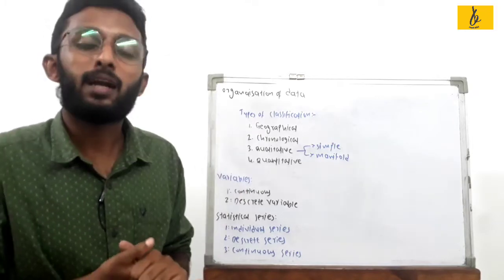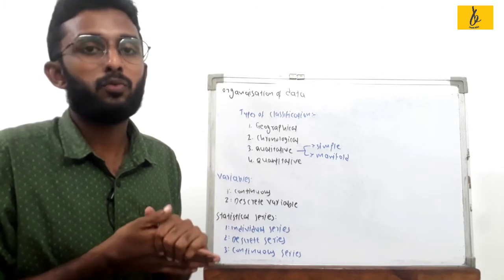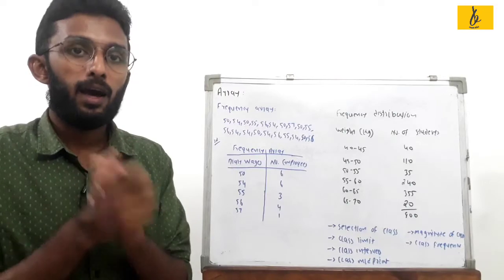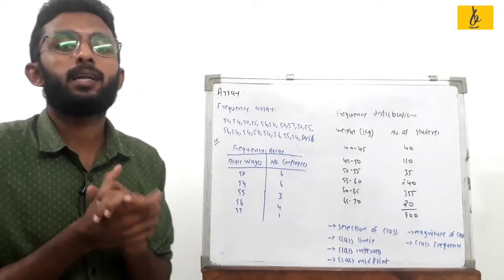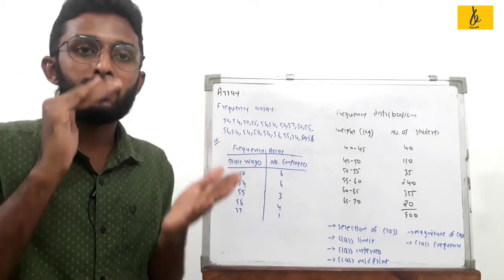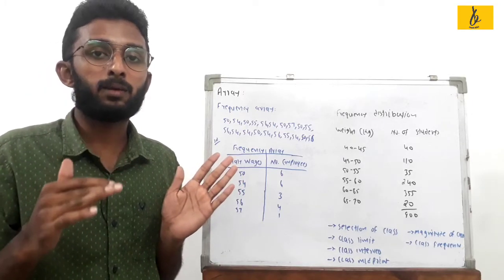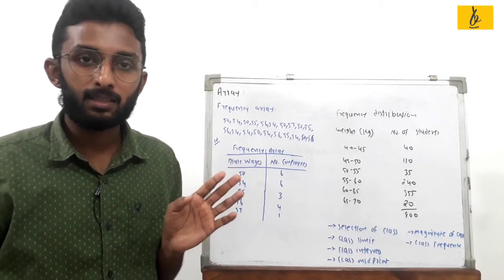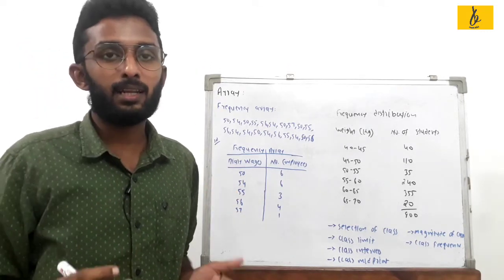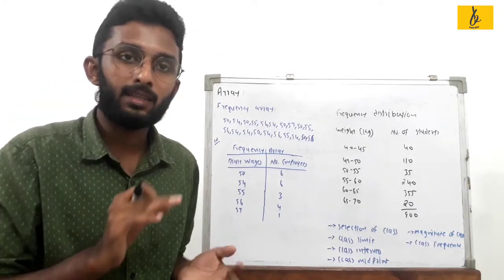We can arrange data in ascending or descending order. Whether road accident data or any other data, we arrange it in order. This is called an Array. We have two types: Frequency Array and Frequency Distribution.